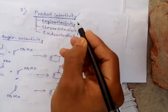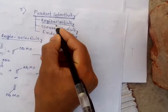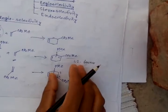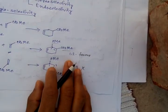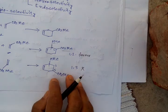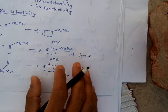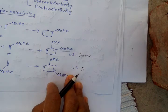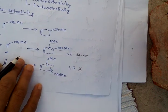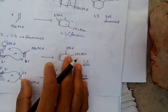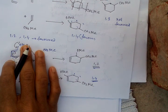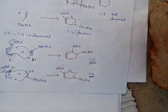In this section, we described only regio selectivity — specifically whether a 1,2, 1,3, or 1,4 product forms. The Diels-Alder reaction cannot form a 1,3-product; only 1,2 and 1,4 products are formed. Thanks for watching.